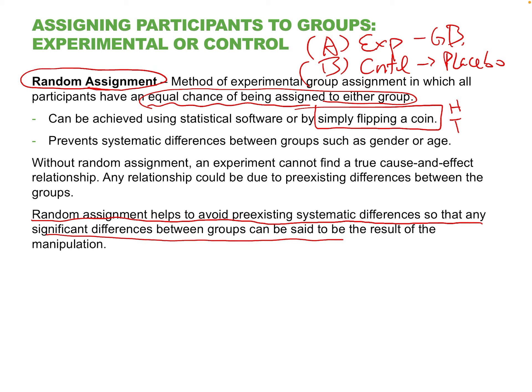If you do flip a coin and you had 10 people who are puzzle champions who would ace the memory test anyway, you'll probably get 5 on one side and 5 on the other — they cancel each other out. That's the power of random assignment: ideally you create two relatively equal groups by having whatever hidden differences split evenly, even if you don't know what those things are. Any significant differences between groups can then be said to be the result of the manipulation — the ginkgo biloba.